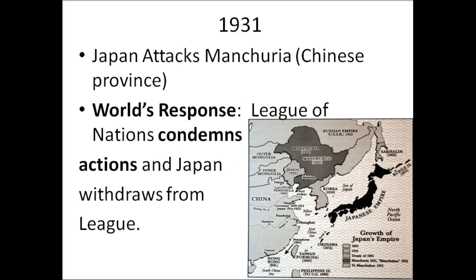Starting in 1931, Japan is going to attack Manchuria — also called Manchuco, which they rename — which was a Chinese province known for rich deposits of iron and coal. Japan wants them to fuel all of the factories in Japan in order to make more products and become more industrialized. The League of Nations condemns the actions and tells Japan they can't do that, and Japan simply withdraws from the League of Nations, not really caring, and decides to continue to expand.